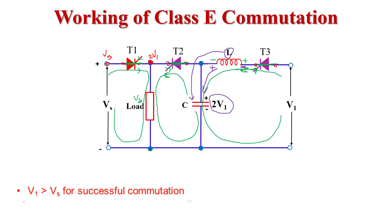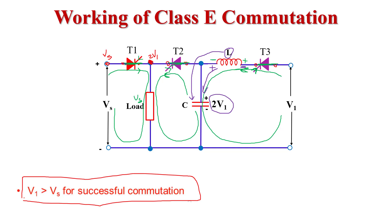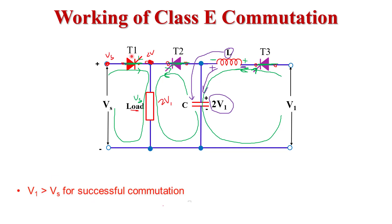This is the condition for successful commutation of thyristor T1. For successful commutation, the voltage 2V1 must be greater than Vs. This is the complete working of class E commutation.